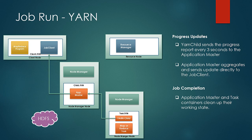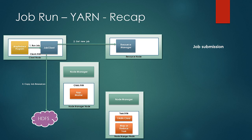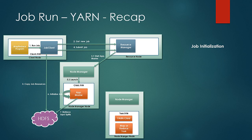Let us have a quick recap of the steps followed. The program triggers the job client, and the job client contacts the resource manager for a new job ID. The job client then copies the job resources to HDFS with high replication and submits the job. The resource manager picks up the job from the queue, contacts the node manager, spawns a new container, and launches the application master. The application master creates a new object, retrieves input splits from HDFS, creates one task per input split, and decides whether the job is an Uber job. If it is, it runs on its own JVM on a single node.